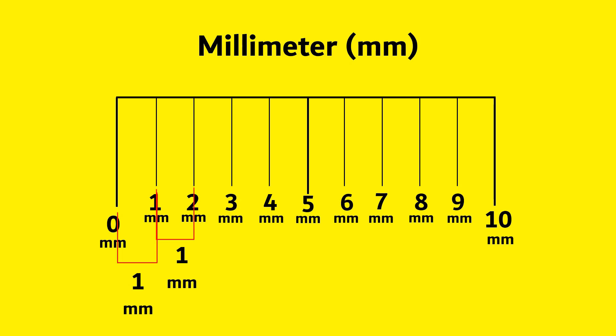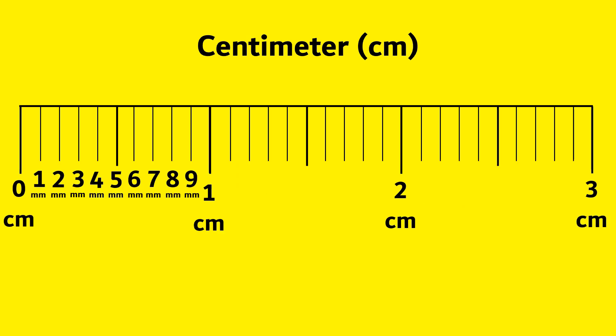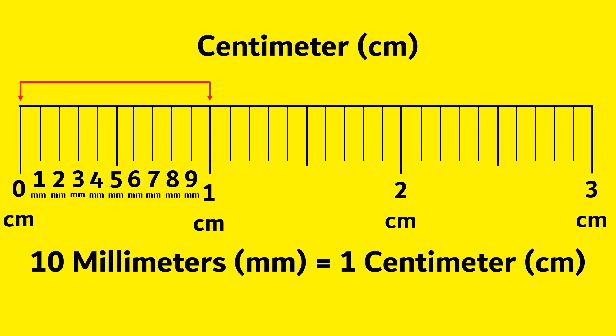From 1 to 2: 1 mm length. From 2 to 3: 1 mm length. Next, centimeter. 10 mm is equal to 1 cm. From 0 mm to 10 mm is equal to 1 cm.